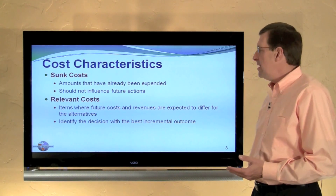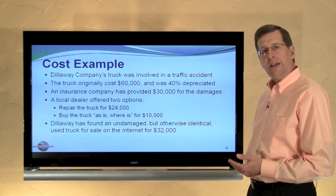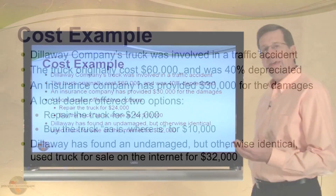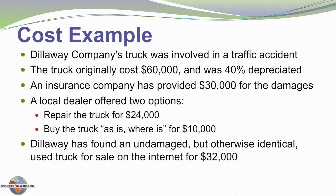This is easier said than done, however, and so let's look at a fairly comprehensive example for Dillaway Company. They had a truck that was involved in an accident. The truck cost $60,000 and was 40% depreciated. An insurance company is going to provide $30,000 toward the damages. They've found a local dealer who can repair the truck for $24,000, or who is willing to buy the truck as-is for $10,000. Dillaway has also found an undamaged but otherwise identical truck on sale for $32,000.